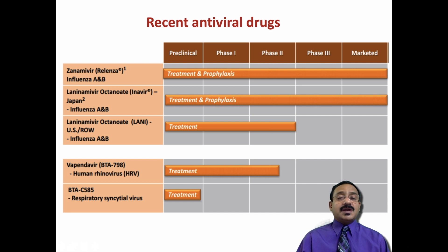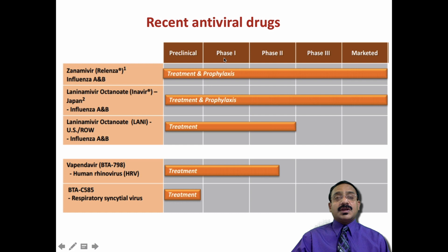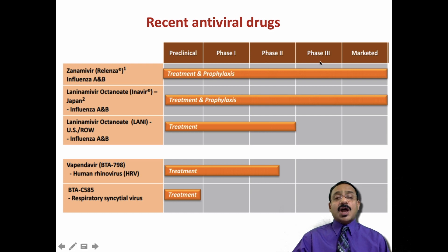Recent antiviral drugs must pass through four different phases before being marketed. There is a preclinical phase; phase one uses lab animals; phase two is a controlled cohort study giving the drug to human volunteers; in phase three it is given to large numbers of human volunteers; and finally, if efficacy is approved, the drug is marketed.